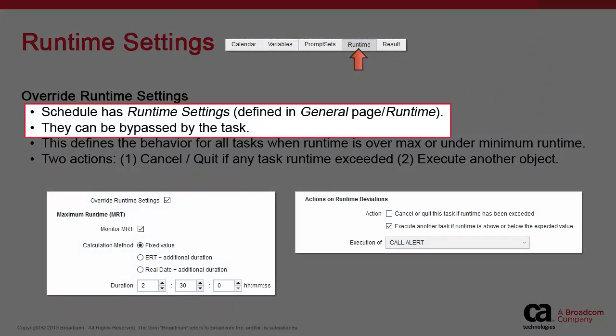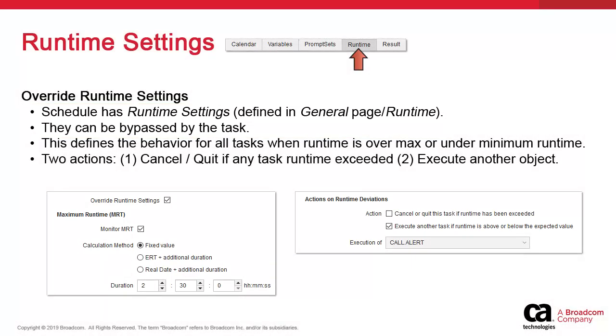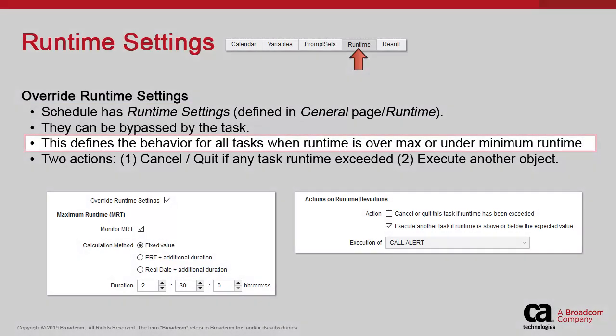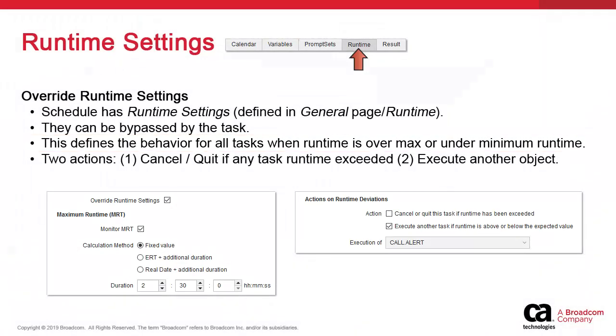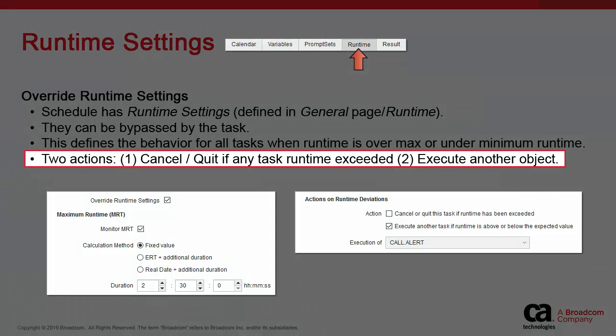The schedule has runtime settings defined in the general page under runtime. These settings apply by default to all tasks, and this particular property allows us to override them. Atomic Automation always measures execution runtimes for all objects and collects statistics and metrics without any required configuration. This produces values like maximum, minimum, and average runtimes, which can then be used to define certain behaviors such as actions based on max and min runtimes.